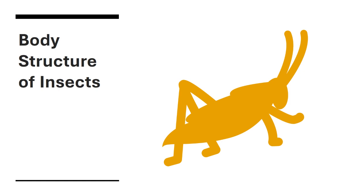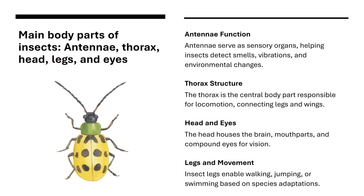Let's start by looking at the main body parts of insects. They include the antennae, thorax, head, legs, and eyes. Antennae act as sensory organs, detecting smells and vibrations. The thorax at the center connects the legs and wings and is key for movement. The head contains the brain, mouth parts, and compound eyes for vision. Insect legs allow them to walk, jump, or swim depending on the species.